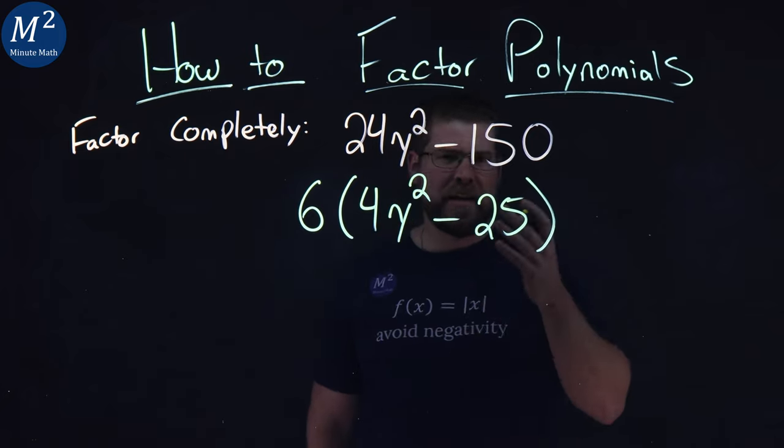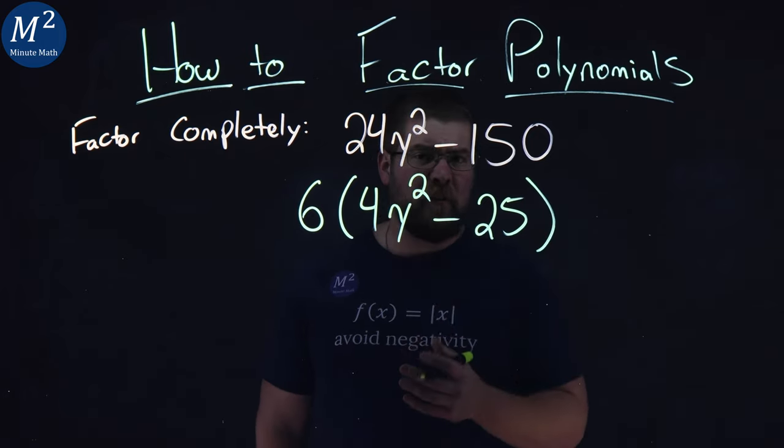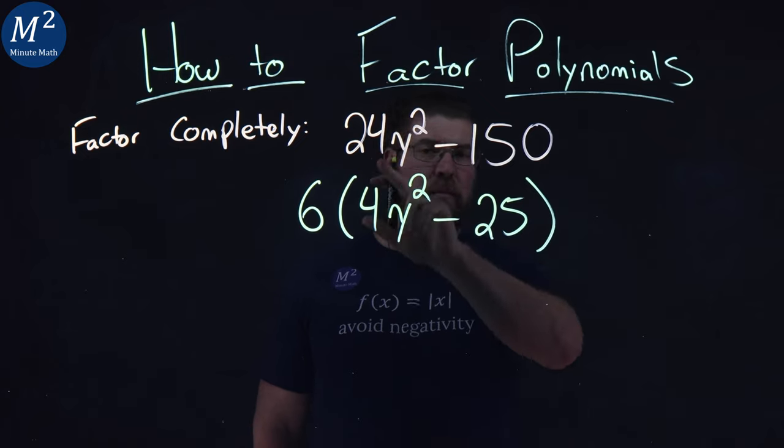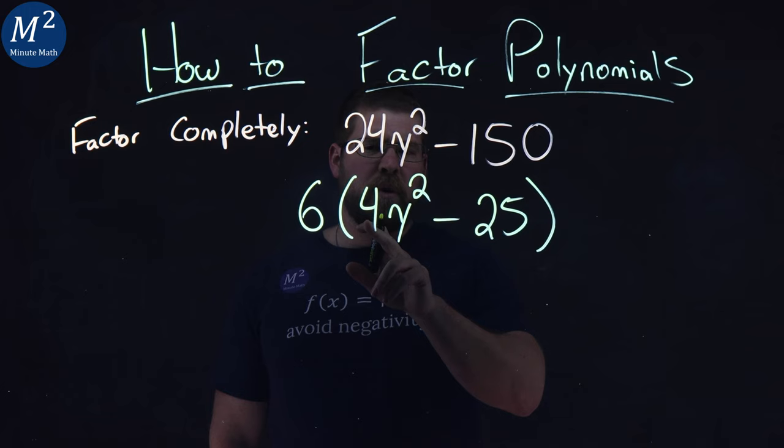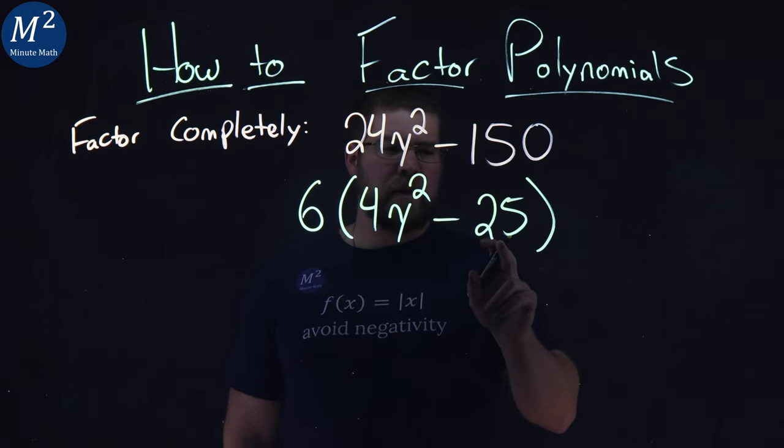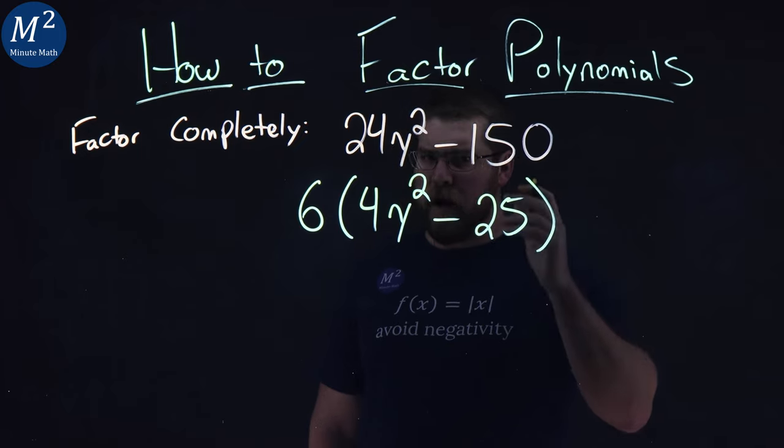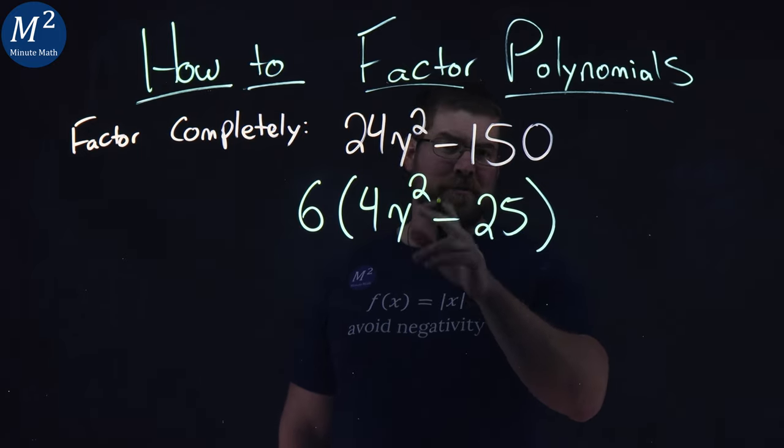Now from here, it kind of gets a little difficult, especially since we have a coefficient, our a value of 4. We're going to look inside this parenthesis. One thing I notice here is 4 is 2 squared, and 25 is 5 squared. And y squared is y squared.